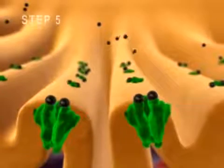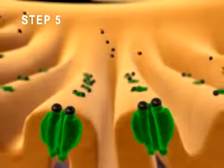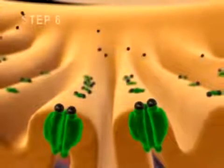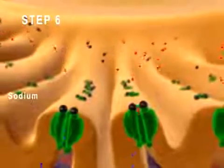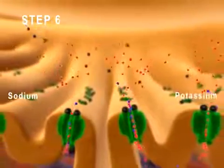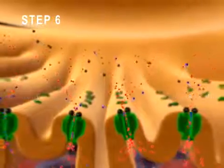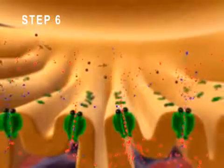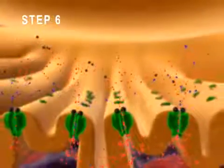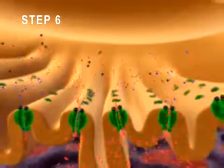Step 5: These ligand-gated cation channels open. Step 6: Sodium ions, shown here in red, enter the muscle fiber and potassium ions, shown here in blue, exit the muscle fiber. The greater inward flux of sodium ions relative to the outward flux of potassium ions causes the membrane potential to become less negative.